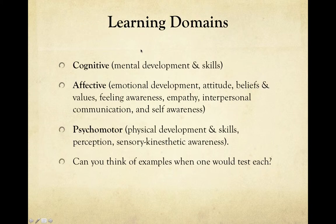In addition to learning objectives, we have something called learning domains. There are three learning domains: cognitive, affective, and psychomotor. Cognitive means we're writing objectives for something we're going to think, like identifying something on a map. Affective is more about emotions and beliefs. And psychomotor is skills — think of like phys ed, actually being able to do something.